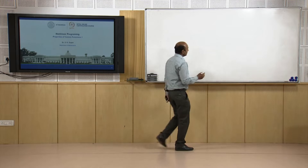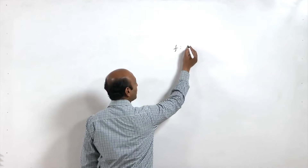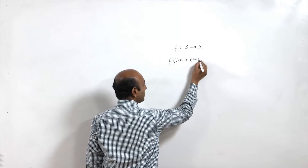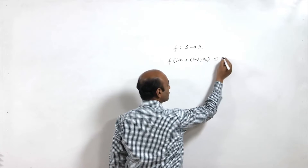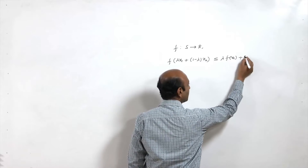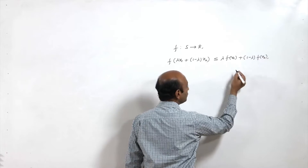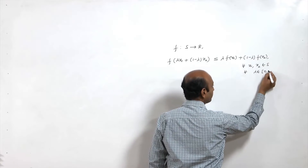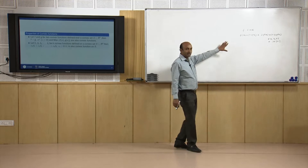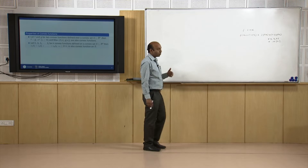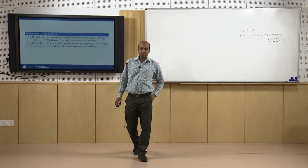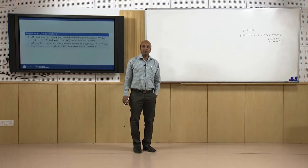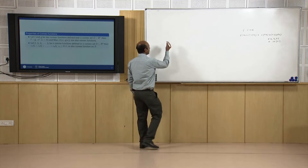A function f from a convex set to R is said to be convex if f(λx₁ + (1−λ)x₂) ≤ λf(x₁) + (1−λ)f(x₂), and this should hold for all x₁, x₂ in S and for all λ between 0 and 1. Now let us discuss some examples of how to prove mathematically that a function f is convex.